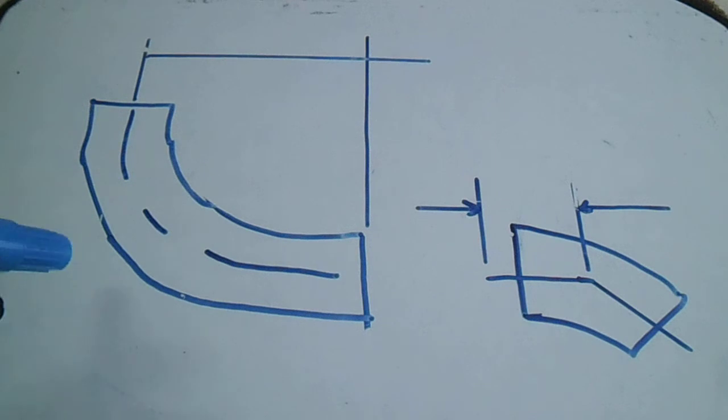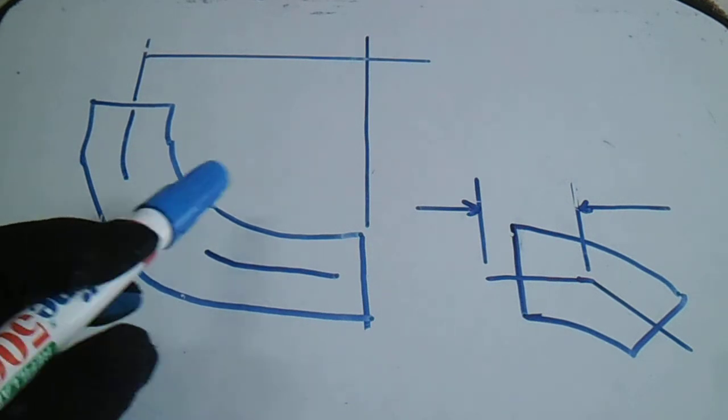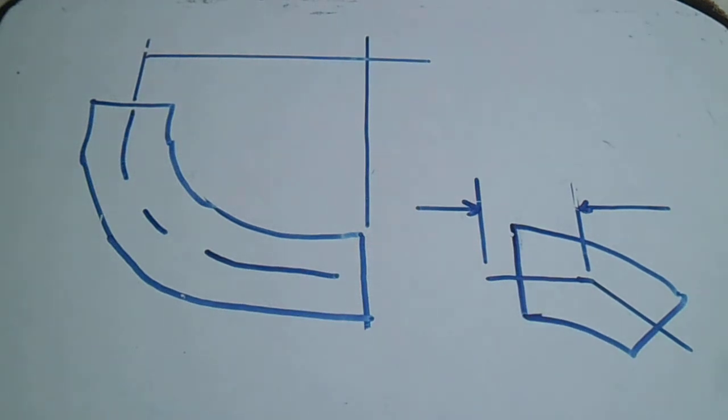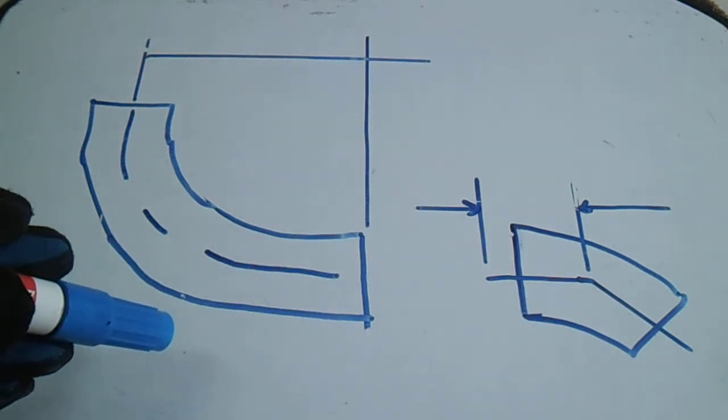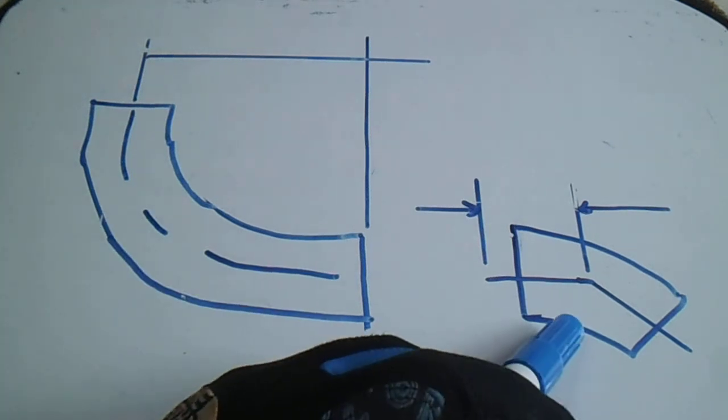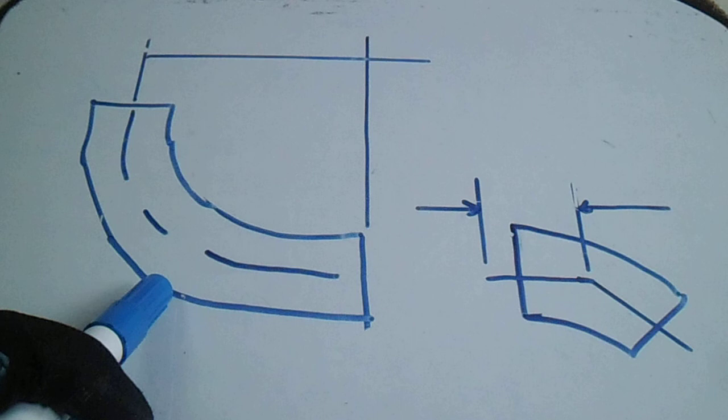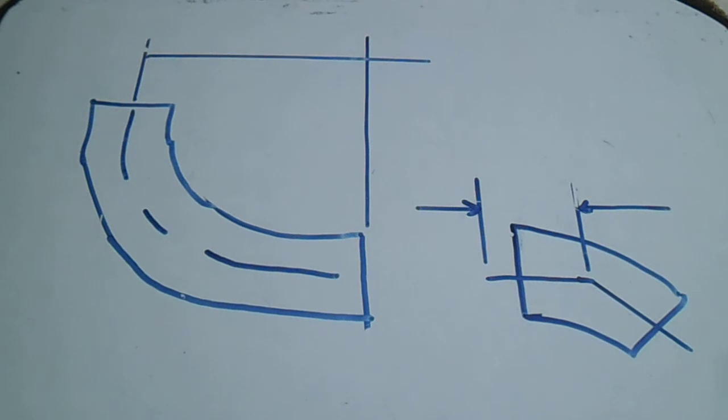14 inch: LR is 533.4, SR is 355.6, for the 45 is 222.3. Next is 16 inch. LR is 609.6, SR is 406.4, 45 is 254. 18 inch: LR is 685.8, SR is 457.2, and 45 degrees elbow is 285.8.